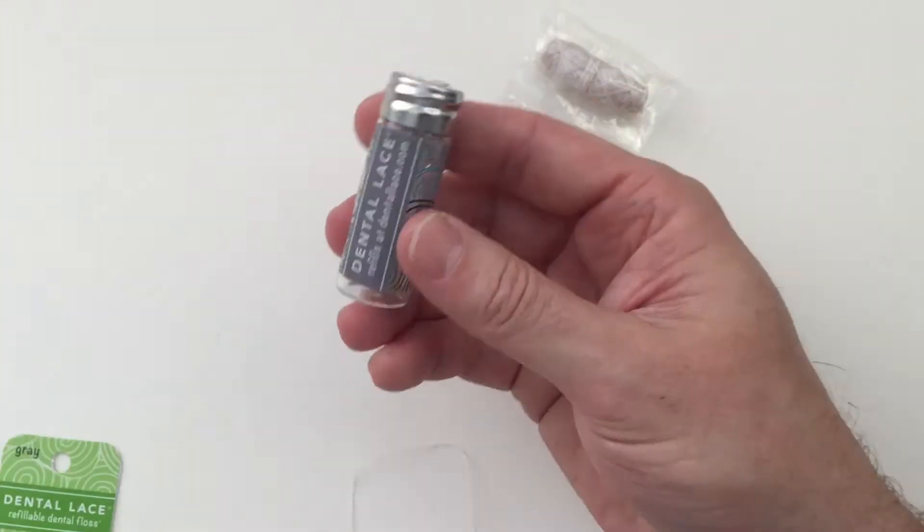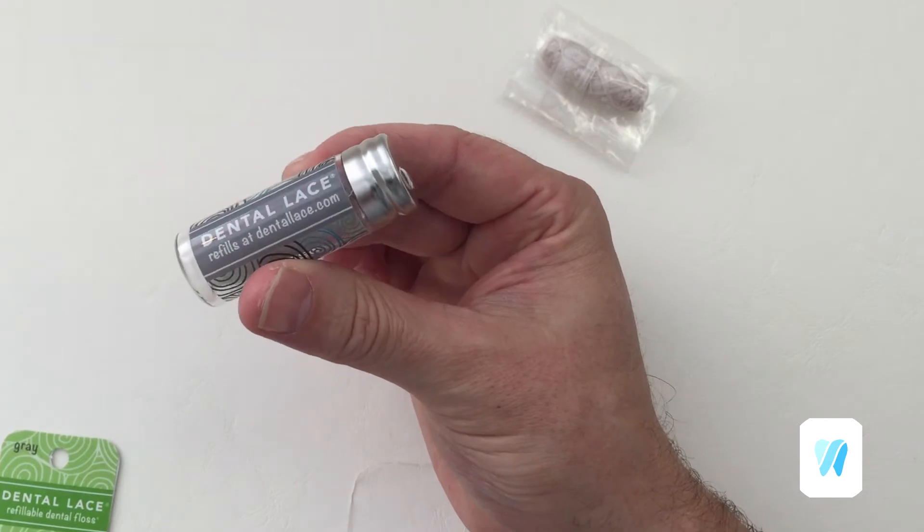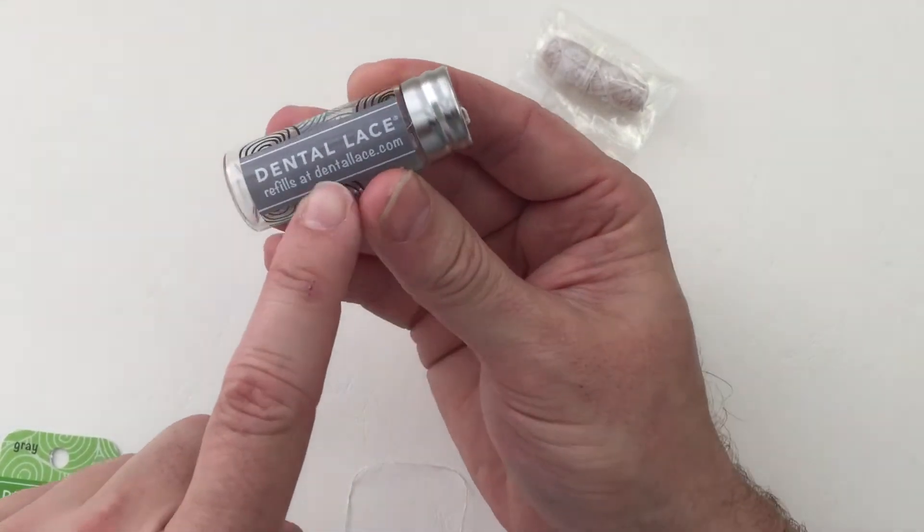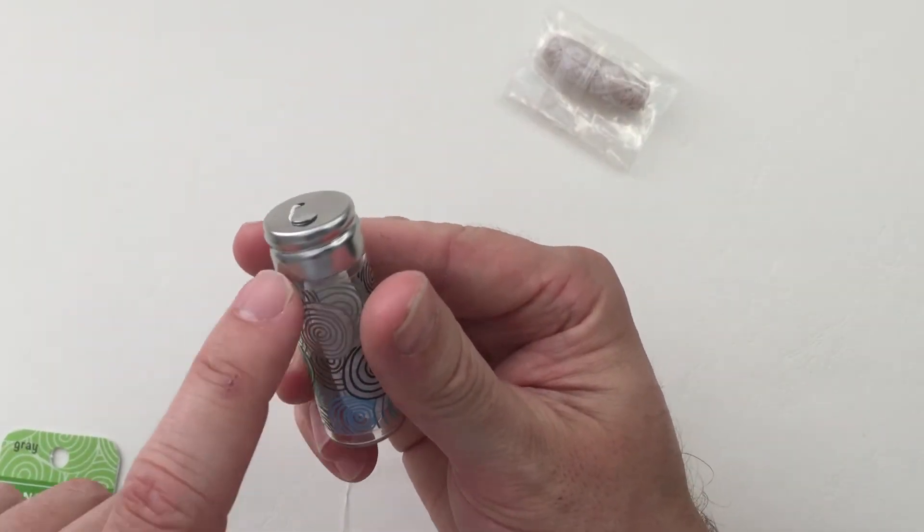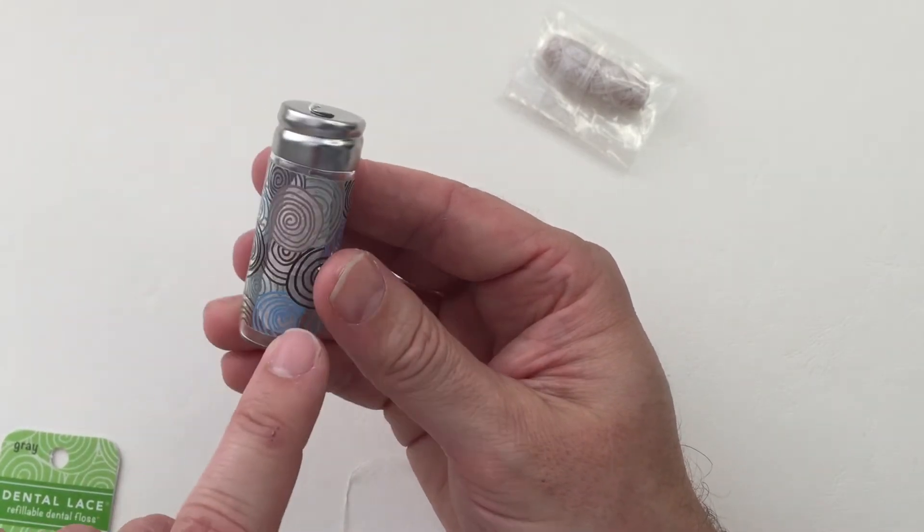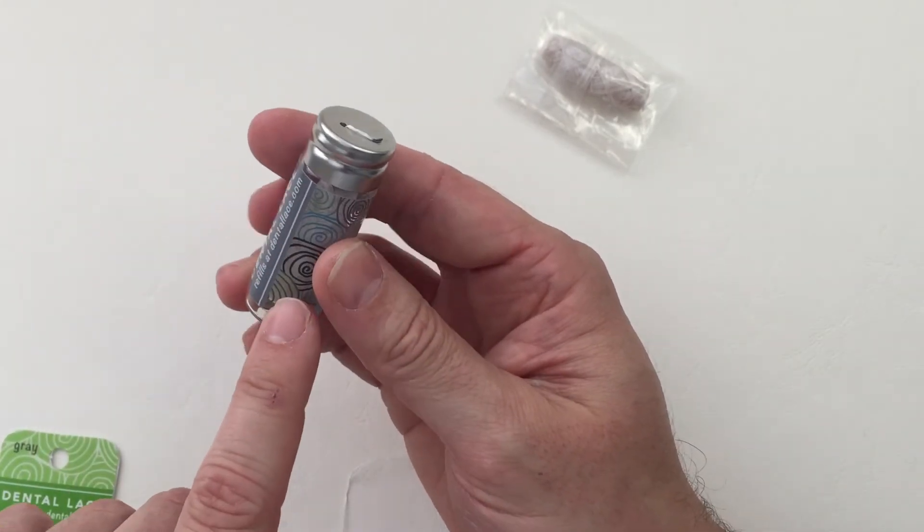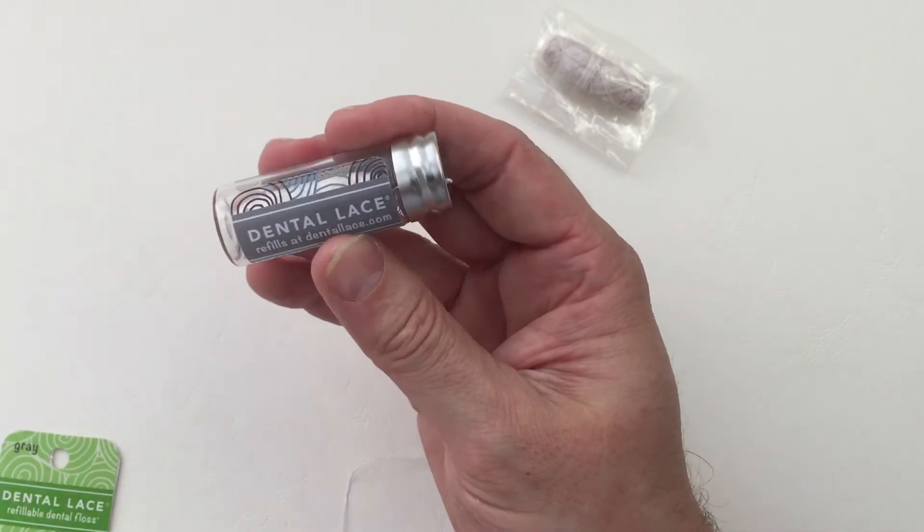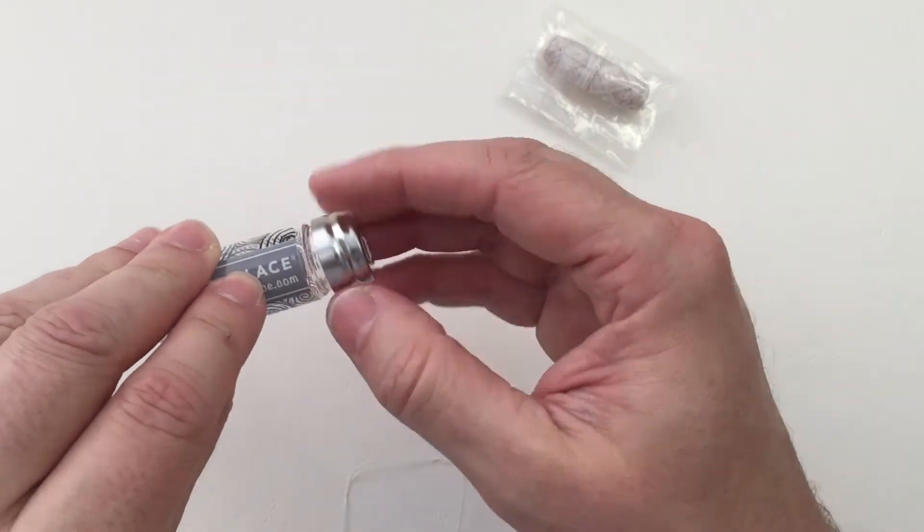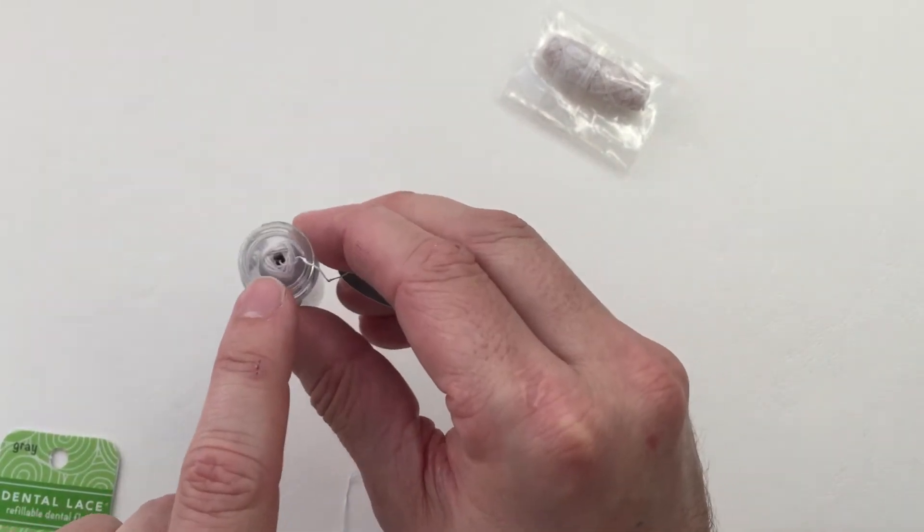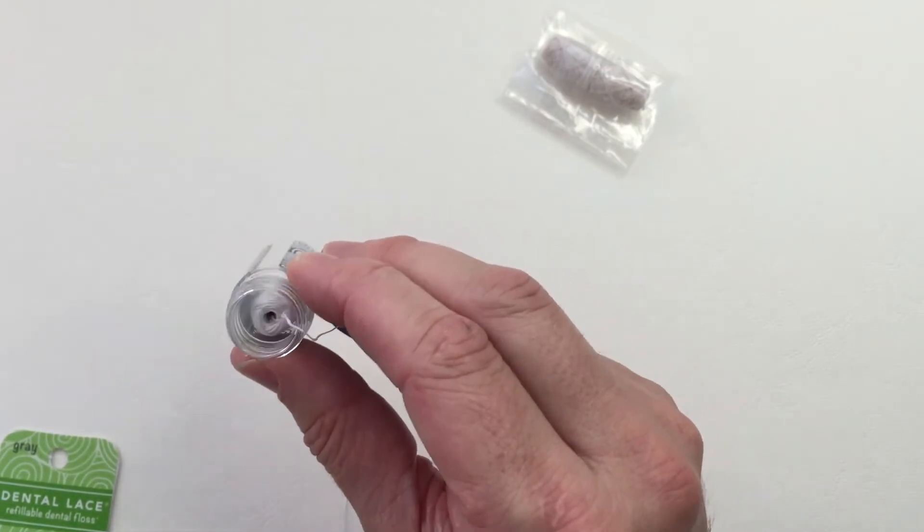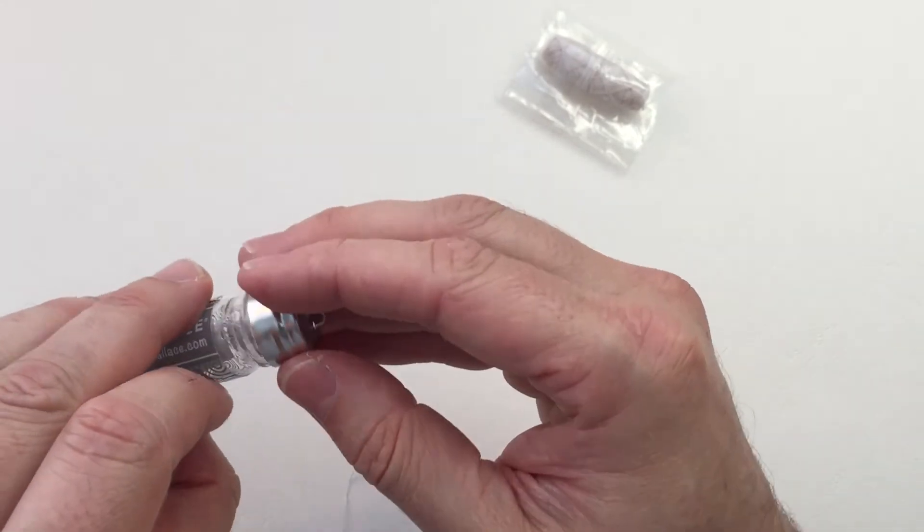Here is the Dental Lace refillable floss. The actual container is glass. It does have some plastic on it, and that's not biodegradable—that's the only part that's not waste-free. It has a stainless steel lid, and you can screw it off to see the spool of silk floss there. It fits nicely in there and is very easy to take out.